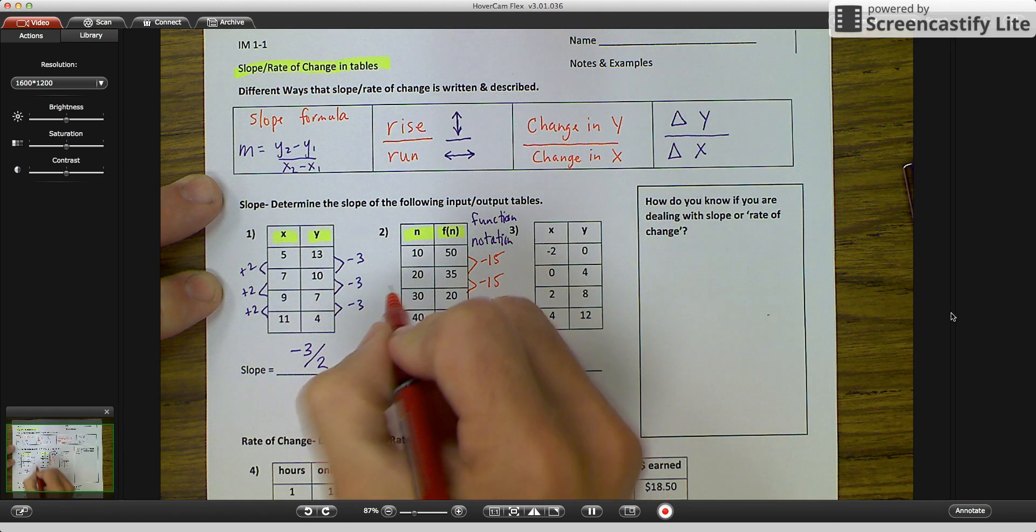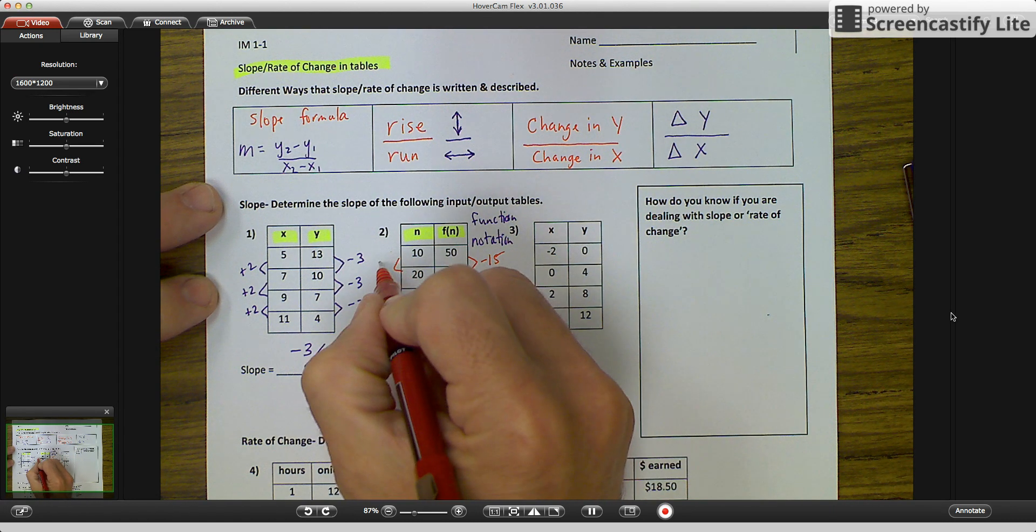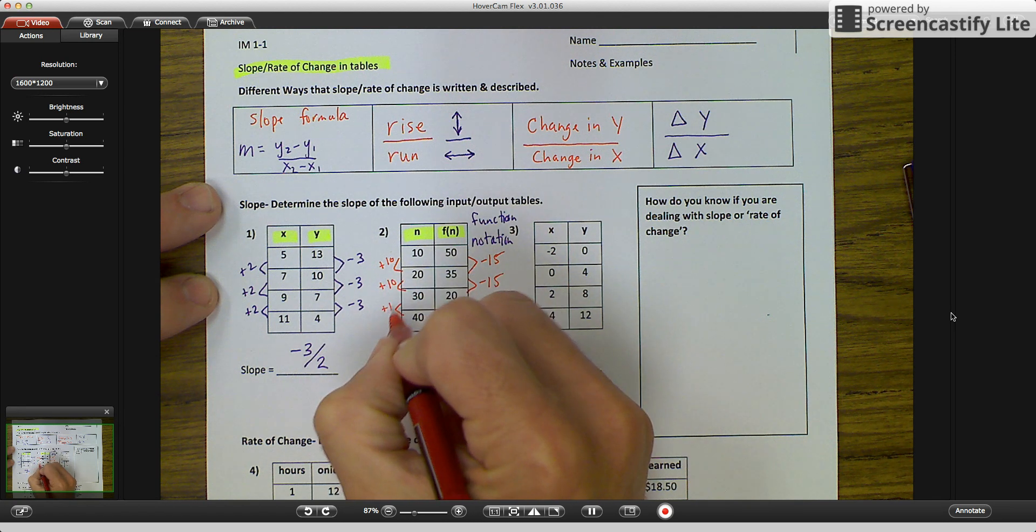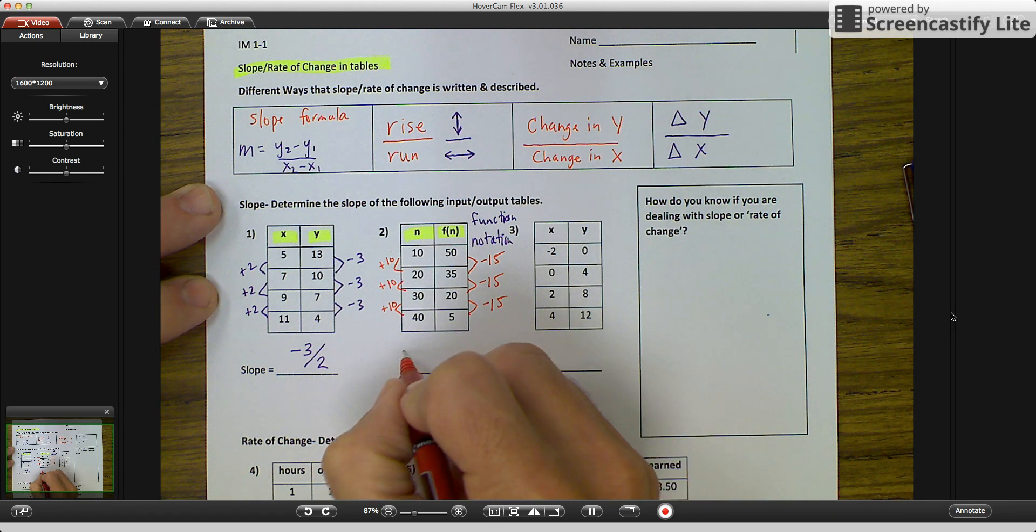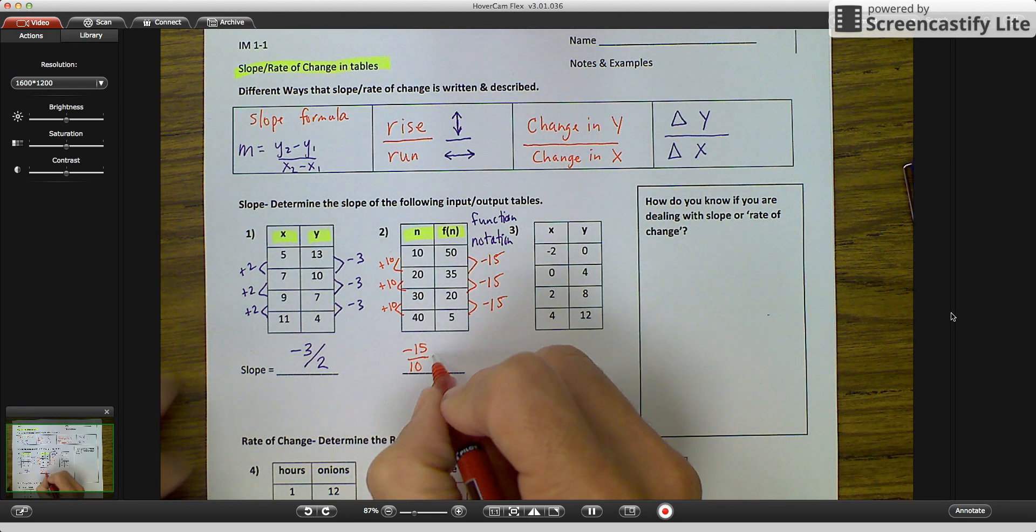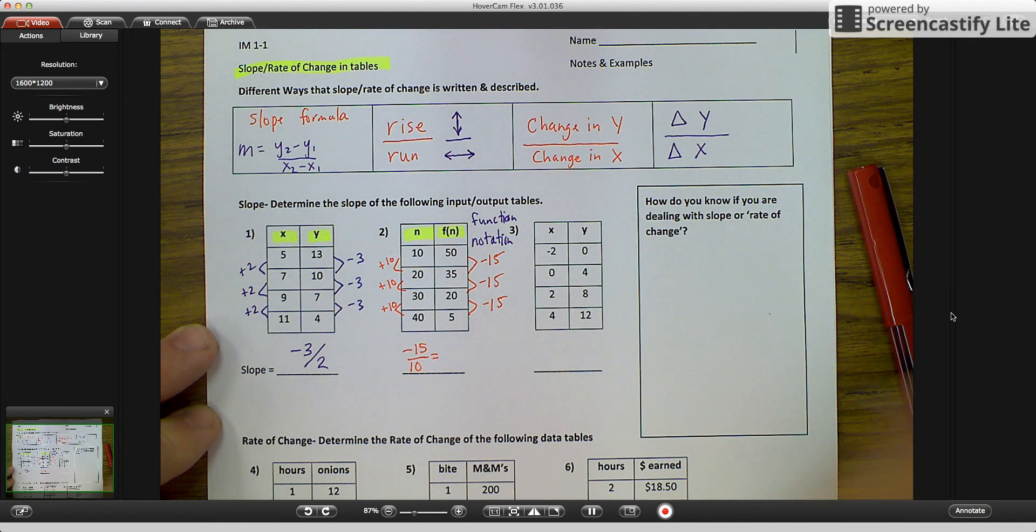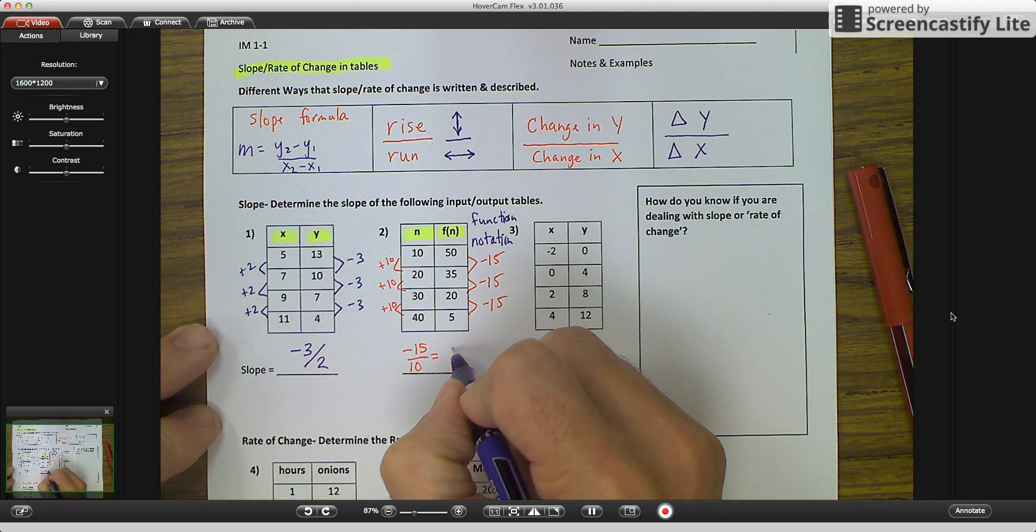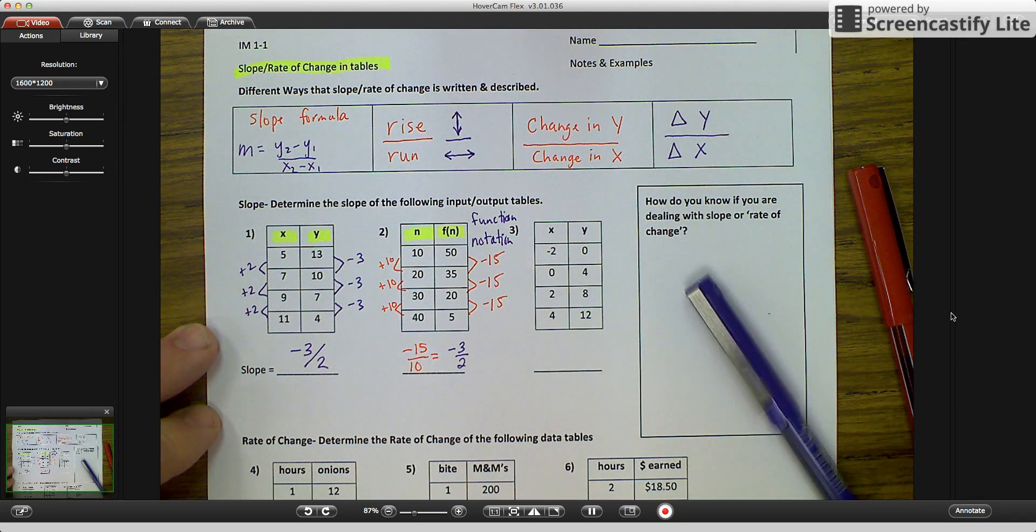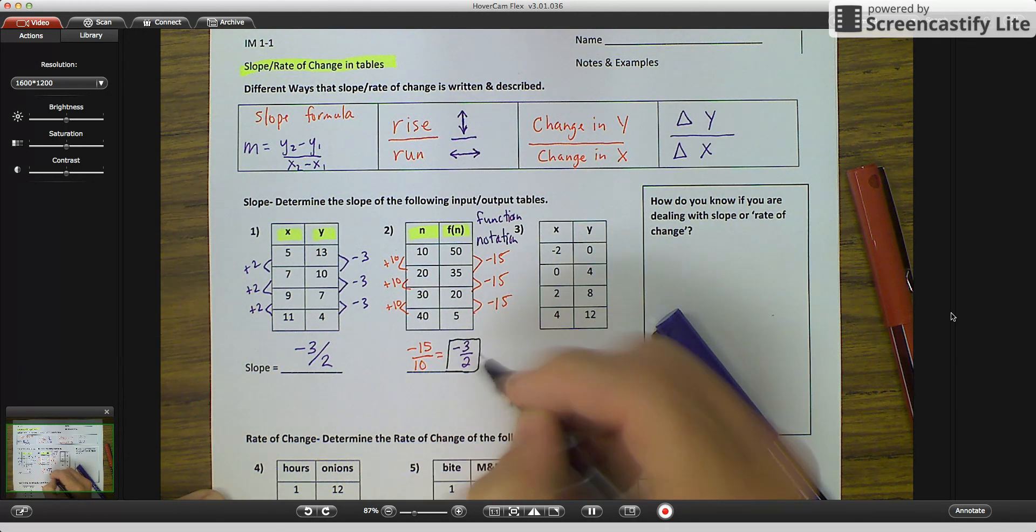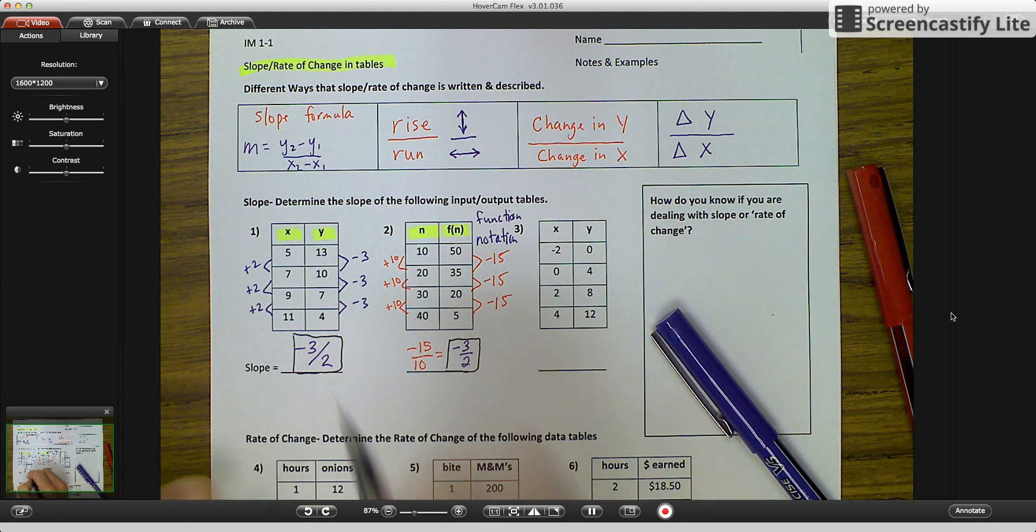My change in my n's, 10 to 20, plus 10. 20 to 30, plus 10. 30 to 40, plus 10. So my slope here would be my change in my y's, negative 15, over my change in my x's, which is 10. But I know that I can reduce this because 5 goes into both of them. So when I reduce it, I get my new reduced slope of negative 3 over 2, which is pretty interesting because this slope has the exact same slope as the first line, but our values were totally different.